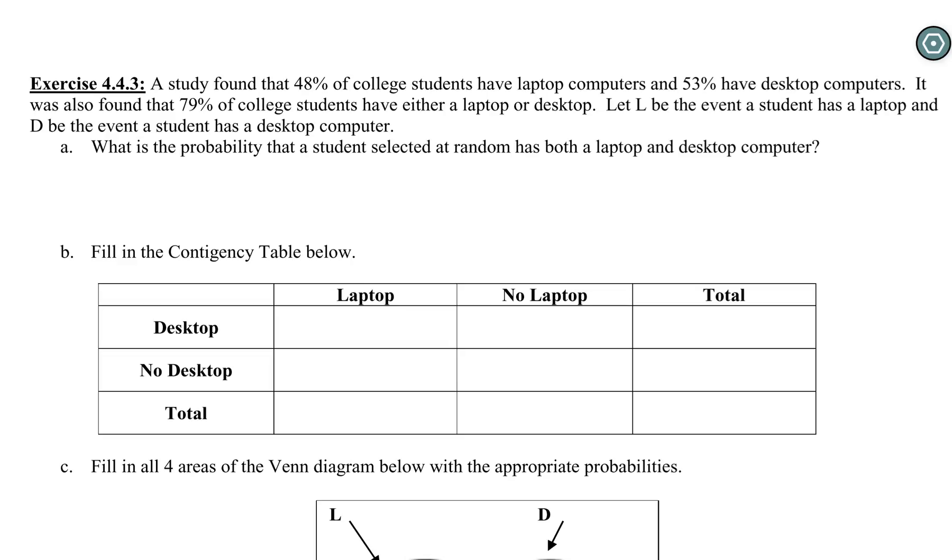Hopefully we've gotten to the point where we realize that our first step is to read through the question, see what our events are, and then do some basic translation. Looking through this question, the very last sentence tells us we're looking at laptop or desktop in terms of what a student owns, and they've told us to use L for laptop and D for desktop.